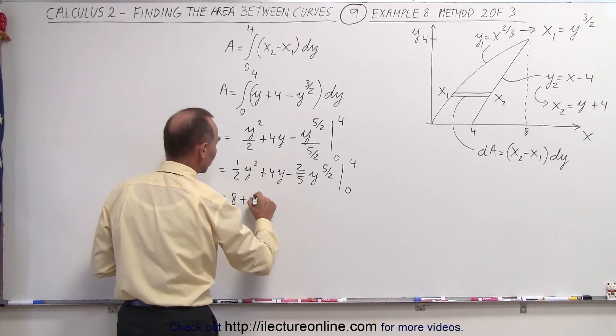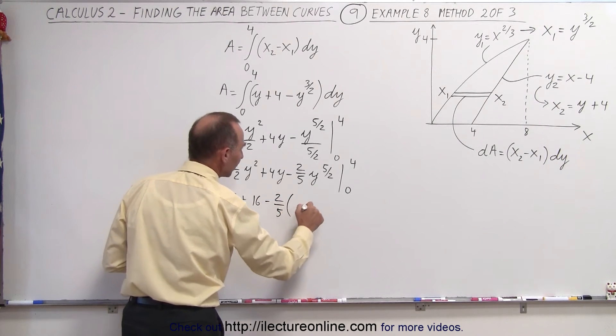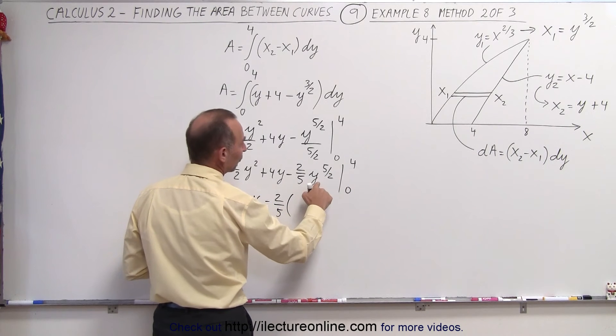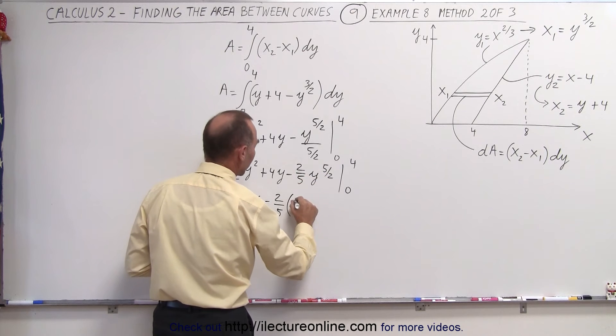Plus 4 times 4 which is 16 and minus 2 fifths times, here when we plug in a 4 for the y we get the square root of 4 which is 2 raised to the fifth power which is 32.